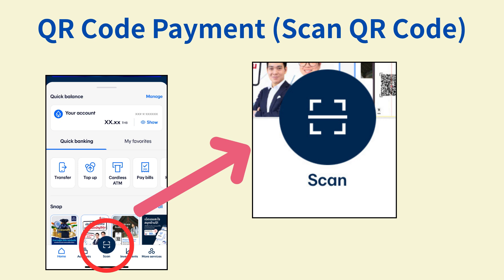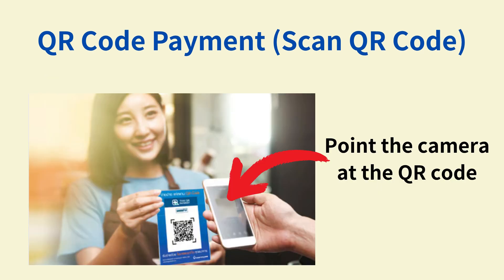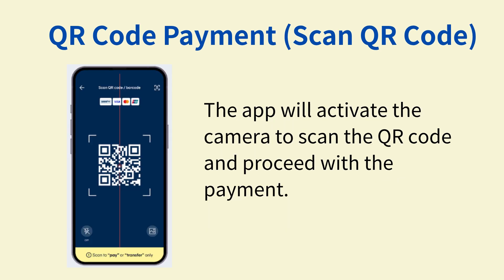To pay with a QR code, tap Scan at the bottom center. The camera will open, allowing you to scan the store's or bill's QR code to proceed with the payment. Point your smartphone's camera at the store's QR code. Once the scan is complete, the payment screen will automatically appear. The app will activate the camera and automatically scan the QR code, then proceed to the payment process.